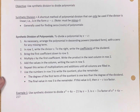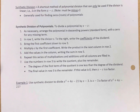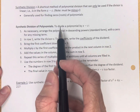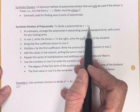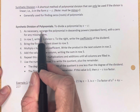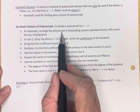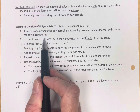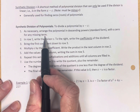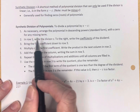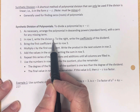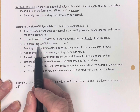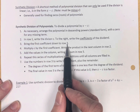So how do we do synthetic division? It's done as follows. It will certainly help when we do a couple of examples. To divide a polynomial by x minus a number: first, arrange the polynomial in descending powers in standard form, with a zero for any missing term. We'll do an example with a missing term for the second example. Second, in row one, write the divisor c, and to the right, write the coefficients of the dividend. Third, bring the first coefficient down to row three. We're going to have three rows total.